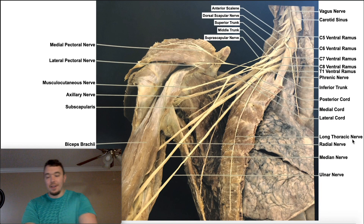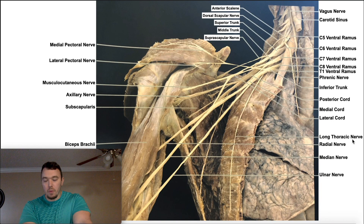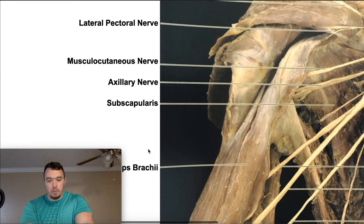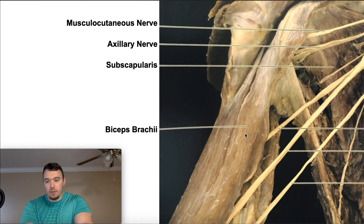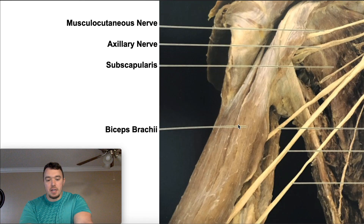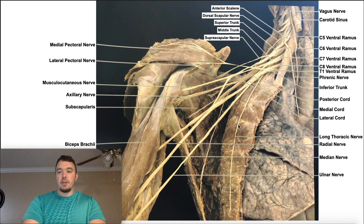The very first thing we should figure out here is: are we looking at an anterior or posterior view? If you're looking at the brachial plexus, it's pretty much always going to be an anterior view, but we can also tell because we've got biceps brachii right here. Medially we have the short head of biceps brachii, and then laterally we have the long head of biceps brachii. So we know we're looking at an anterior view.